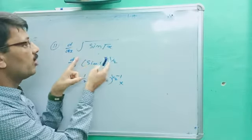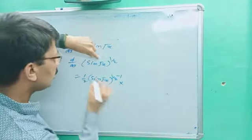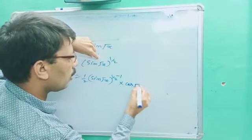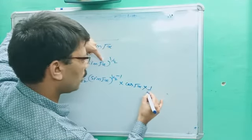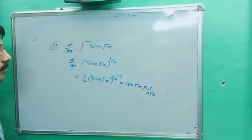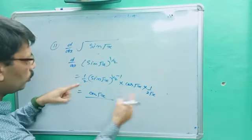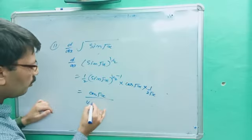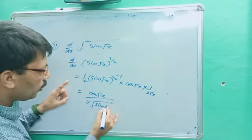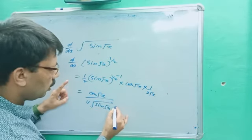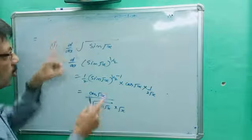Inside the bracket we have sin(√x), not just sin x, so there are two tiers. First differentiate sin(√x): sin becomes cos(√x). Then differentiate √x, which gives 1 upon 2√x. So multiply by cos(√x) and then by 1 upon 2√x.